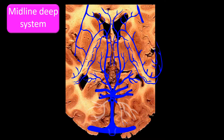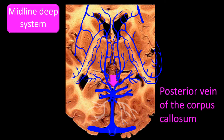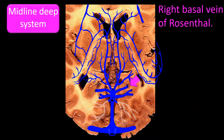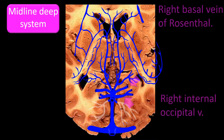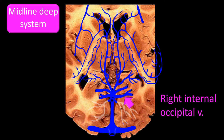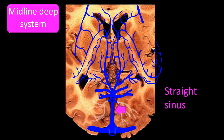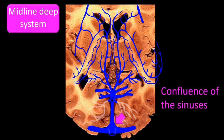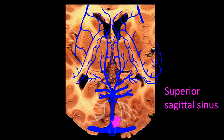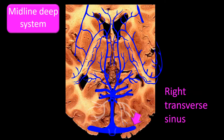In addition to the internal cerebral vein, in this horizontal view you need to be able to identify: the vein of Galen, the posterior vein of the corpus callosum, the basal vein of Rosenthal, the internal occipital vein, the superior cerebellar vein, the inferior sagittal sinus, the straight sinus, the confluence of the sinuses, the superior sagittal sinus, and the transverse sinus.